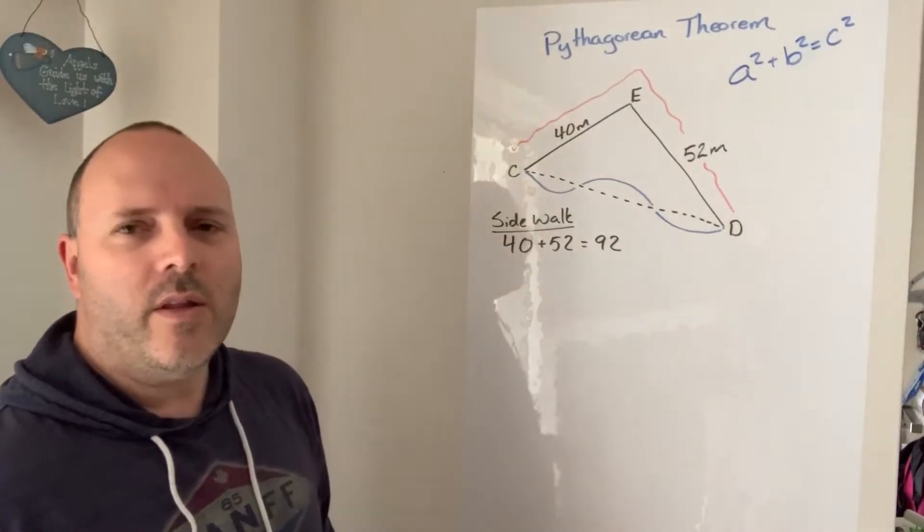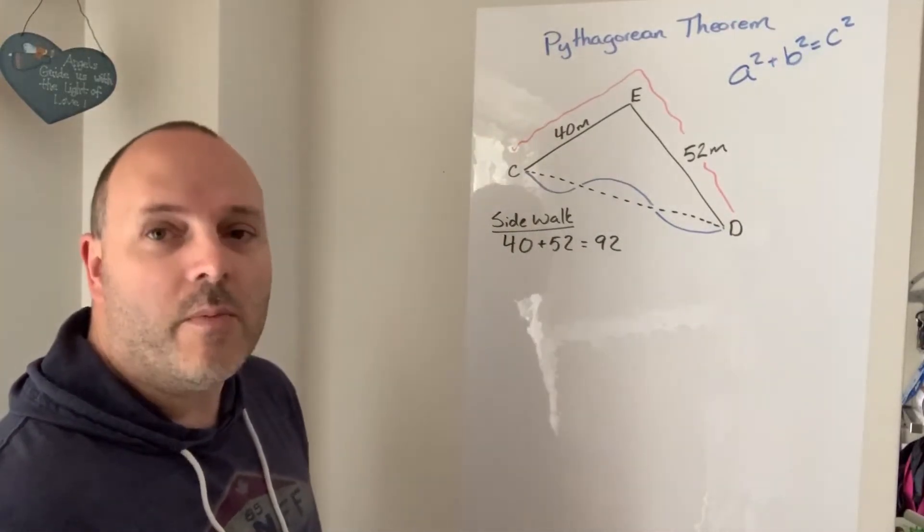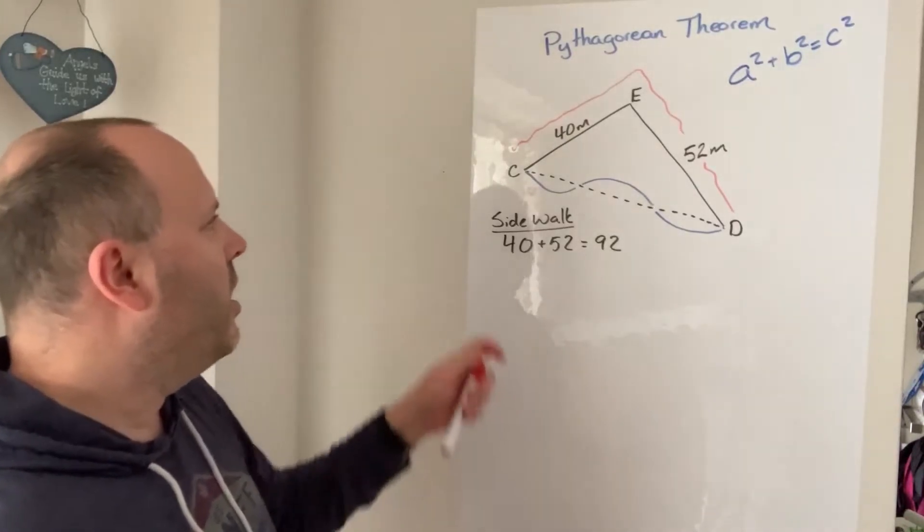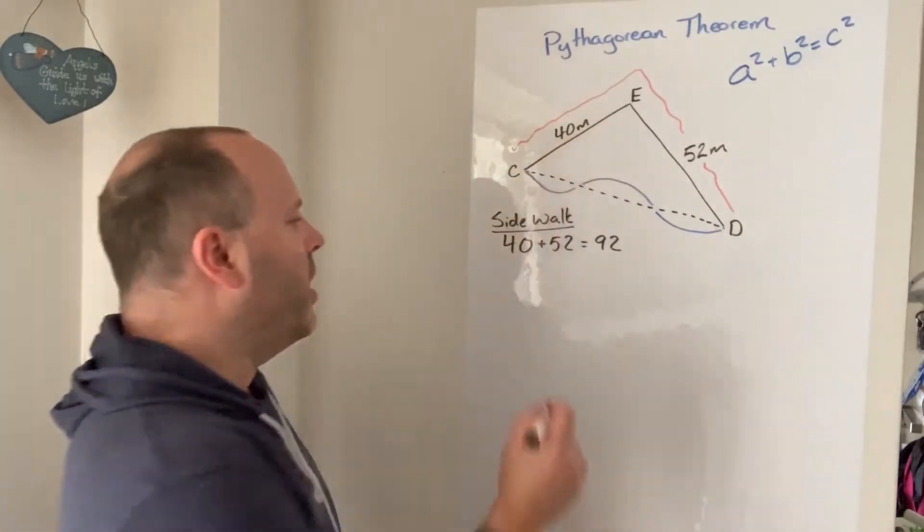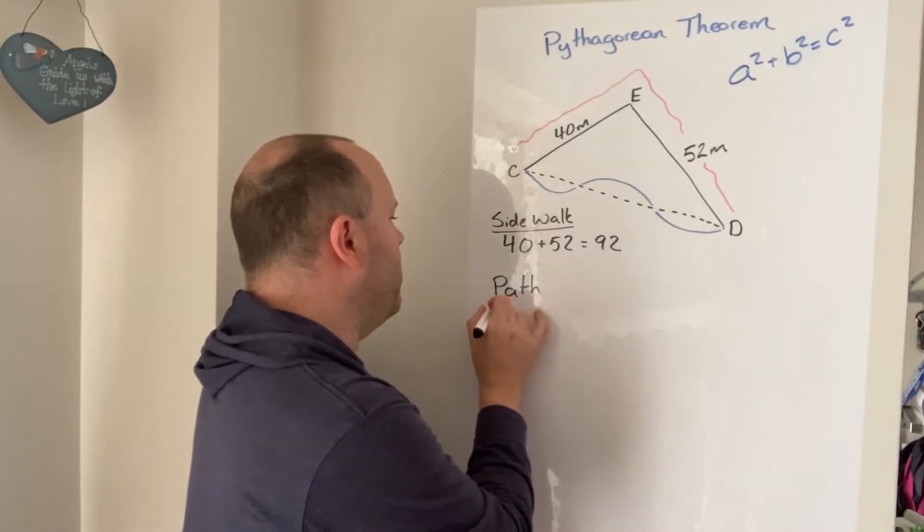Well I'm going to use Pythagorean Theorem to get a rough idea how far that is and then see how much I save myself by walking the path instead of walking the sidewalk. So one short side of the triangle is 40, the other short side of the triangle is 52.